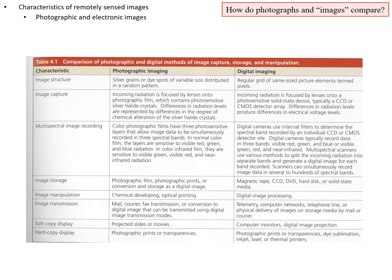For image transmission with photos, you have to send them in the mail or FedEx, which is a big hassle when working with a lot of photos. With digital images, you can send them over the internet or on a hard drive, which is much more efficient. For display, film might be placed over a light table for a better view. Digital images use computer monitors and digital image projection, which is more convenient — that's soft copy display. For hard copy display, you can make prints or transparencies from photos, and with digital imaging you can also use inkjet, laser, or thermal printers.